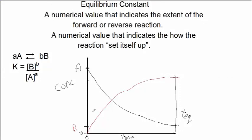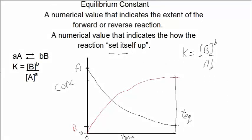I want you to predict whether this is a product or reactant-favored reaction — or another way of saying it, how did the reaction, quote, set itself up? If you guessed products, you're correct. Because if we look at the equilibrium constant, K equals [B] raised to the b power over [A] raised to the a power, and we see that the concentration of B is greater than the concentration of A. That falls into the scenario of larger number over smaller number, so K is going to be greater than 1. Therefore, this is a product-favored reaction.